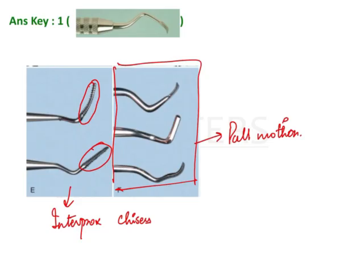The main advantage of these chisels is that since they are narrow, they can be inserted into the interdental area and they are useful to remove the bony irregularities that are present over there.